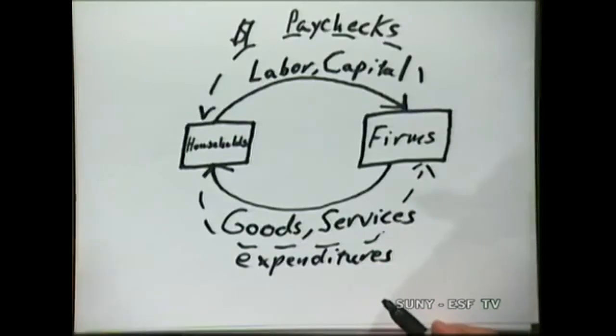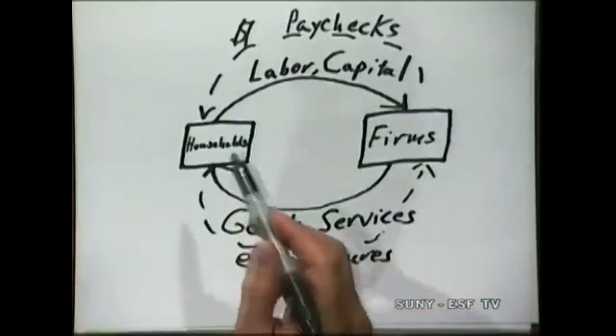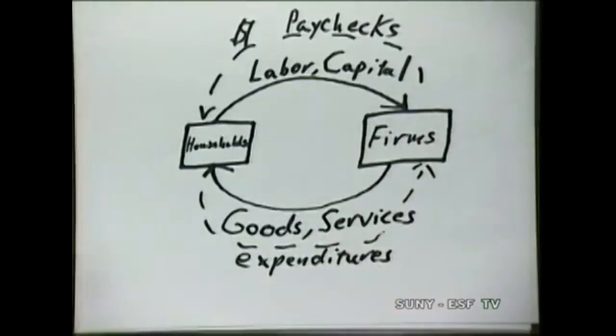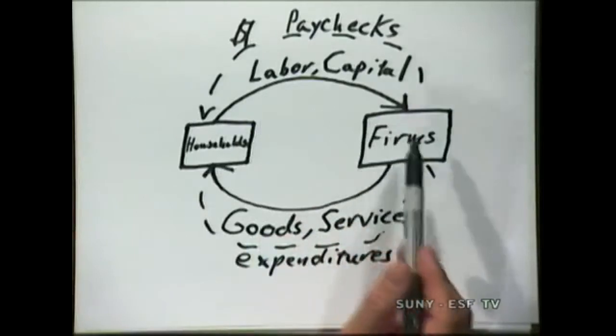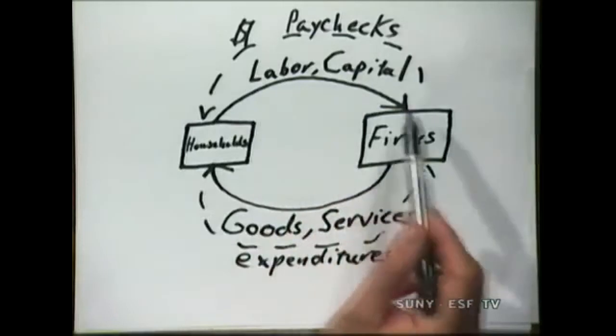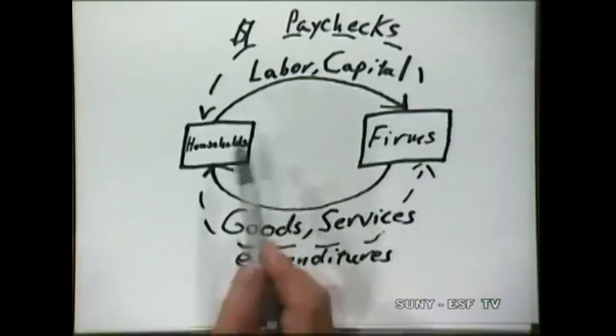So this is the basic neoclassical economic model. You can see it makes some sense — we've got a lot of important things in here. We have the households giving labor and capital to firms, and they give goods and services to households. Labor and capital to firms, goods and services to households. Around and around forever.